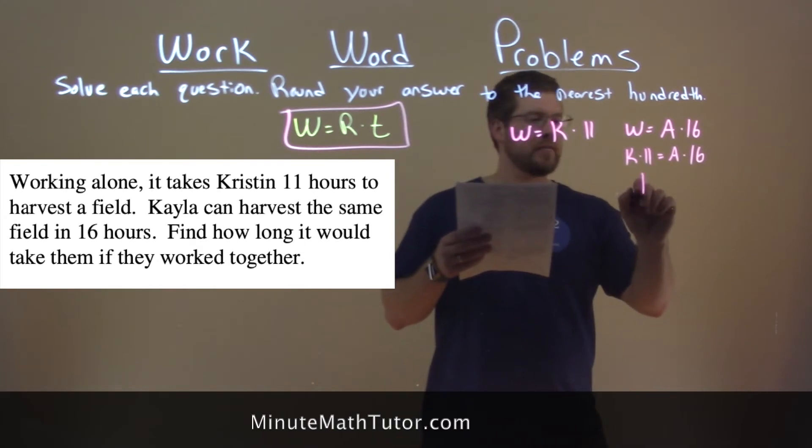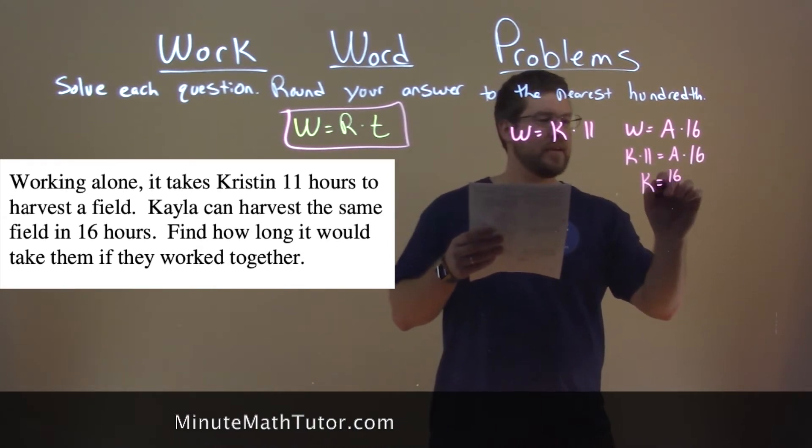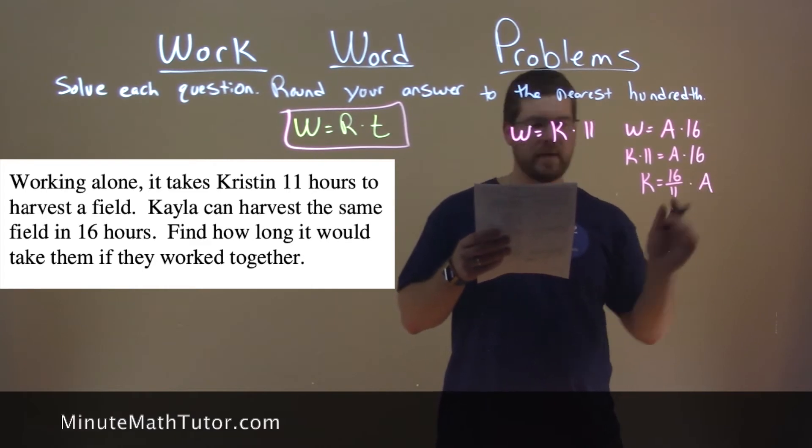Getting K by itself, K equals 16 over 11 times A.